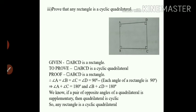Taking opposite angles A and C: angle A is 90 degrees and angle C is 90 degrees, so angle A plus angle C equals 180 degrees. Similarly, B and D are opposite angles, each 90 degrees, so angle B plus angle D equals 180 degrees. We know that if a pair of opposite angles of a quadrilateral is supplementary, then the quadrilateral is cyclic. Therefore, any rectangle is a cyclic quadrilateral.